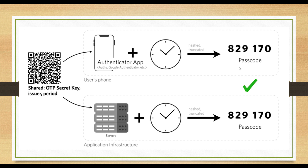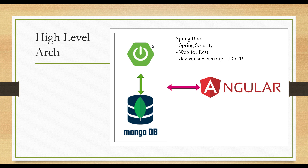After scanning, the authenticator app and server use the same time-based logic — the server generates a one-time password, matches it against the user's input, and lets the user in. On a high level, we are going to use Spring Boot, MongoDB, and Angular as our front end. We'll mostly focus on OTP generation and verification, using a third-party dependency to generate and validate the OTP.